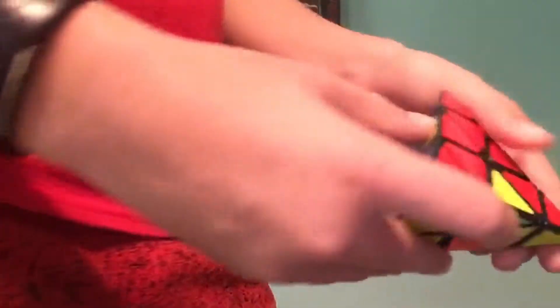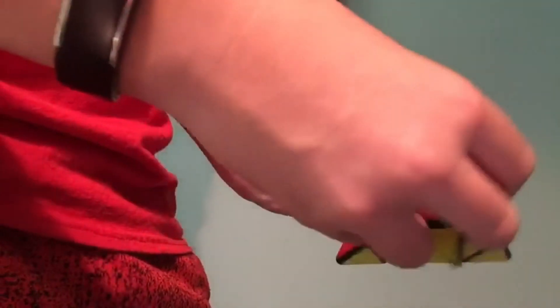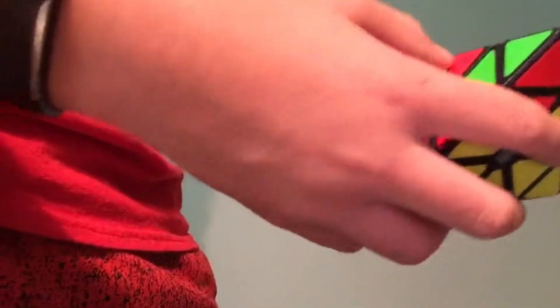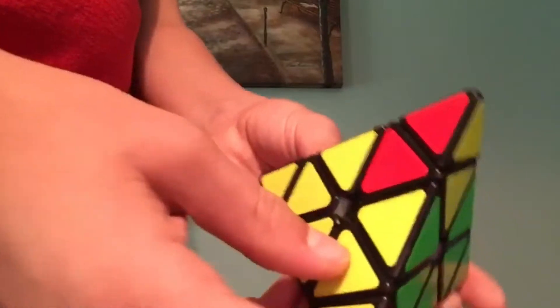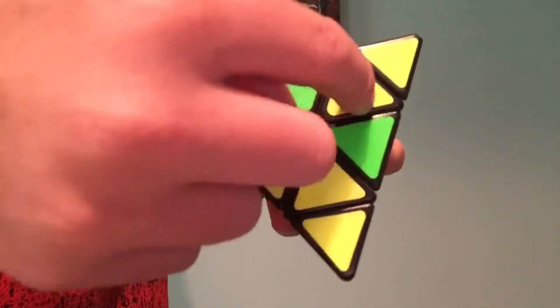And then you're going to just do the same, get that one. But then you have to bring it up here, so it's yellow, yellow. Then it will be red, red, green, like that. And this part's not hard to solve. You turn it to the side where it's like that, that, and that.